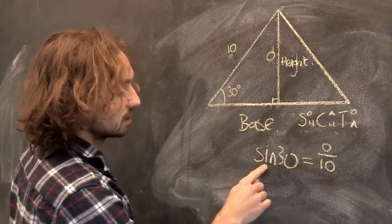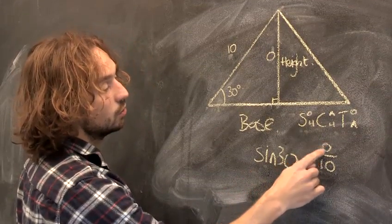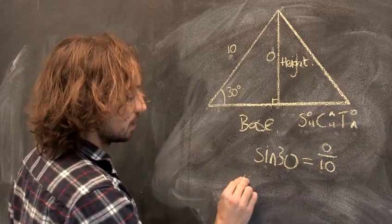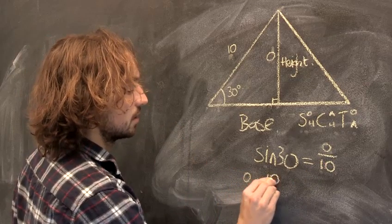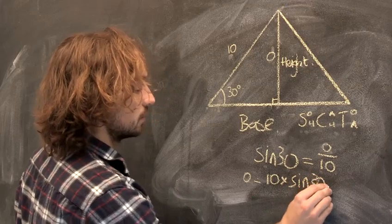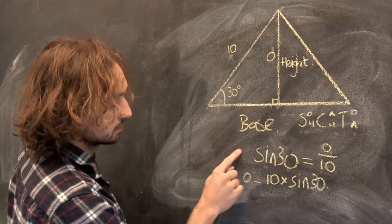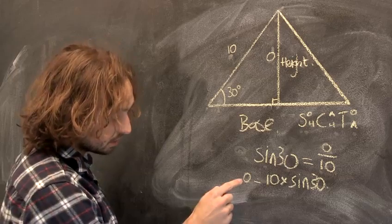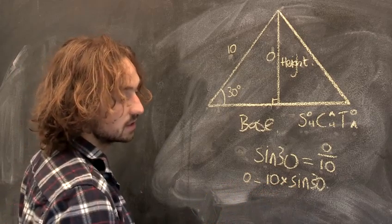So we know that sine of 30 is O divided by 10. So O is 10 times sine 30. You just multiply everything by 10 and the 10 comes up here. So O is 10 times sine 30.